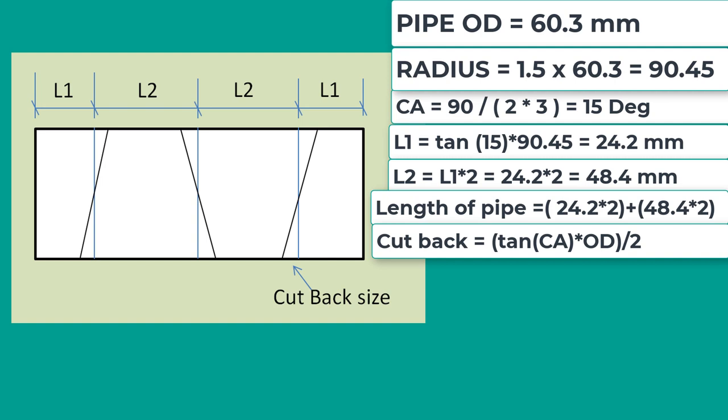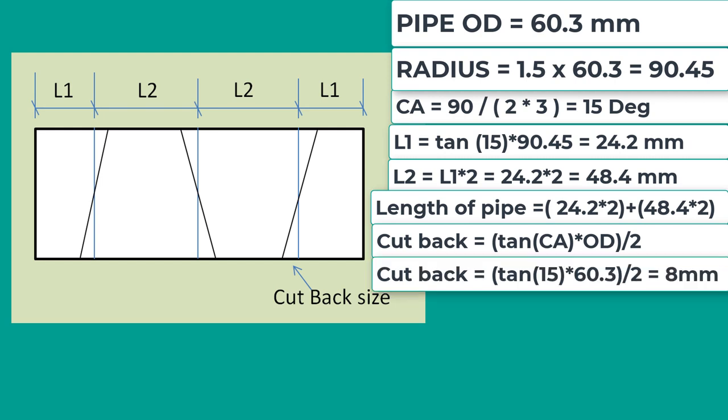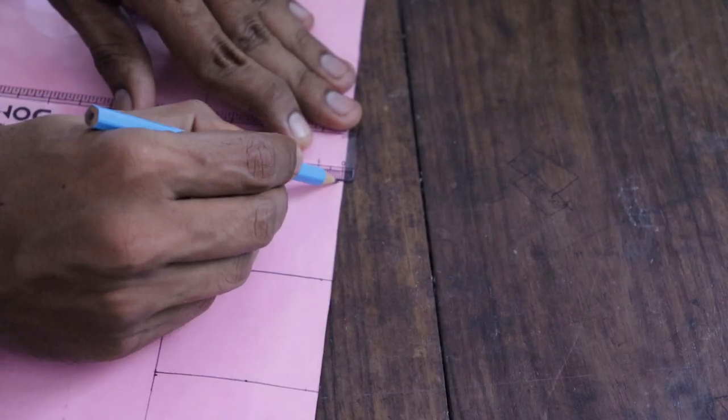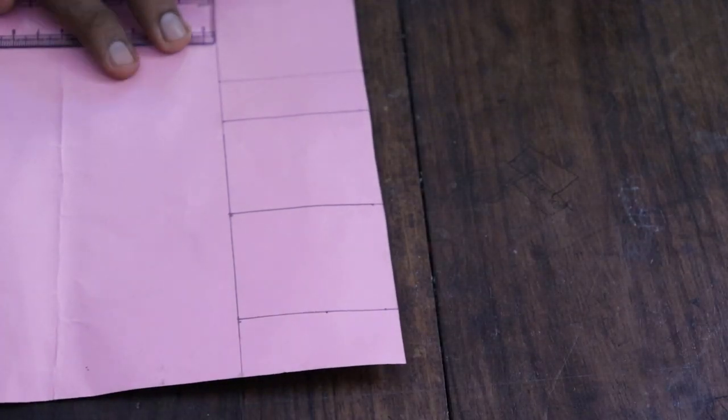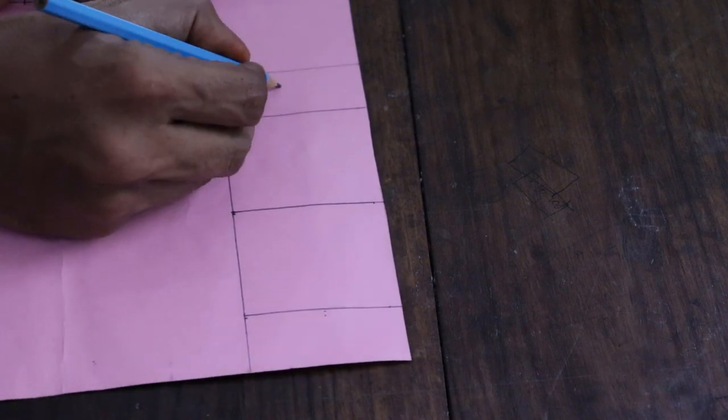Cutback equal to tan CA into OD divided by 2. Tan 15 into OD outer diameter of pipe is 60.3 divided by 2. The answer would be 8 millimeter. Now let's mark these dimensions as per this drawing. I don't have a steel pipe for this demo, so I'm making this on a paper.